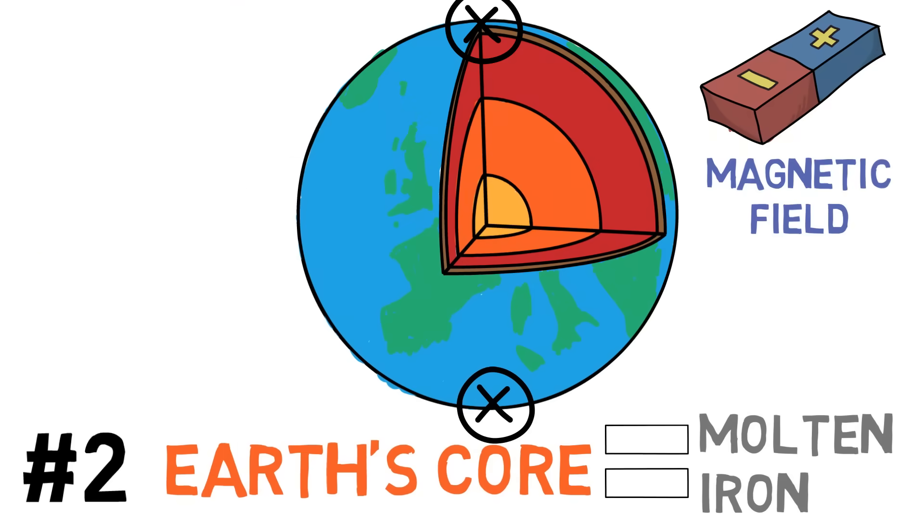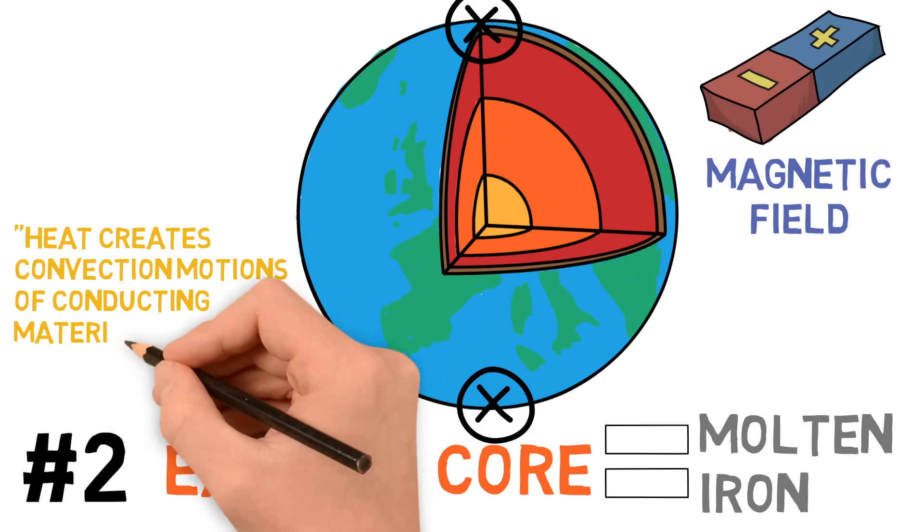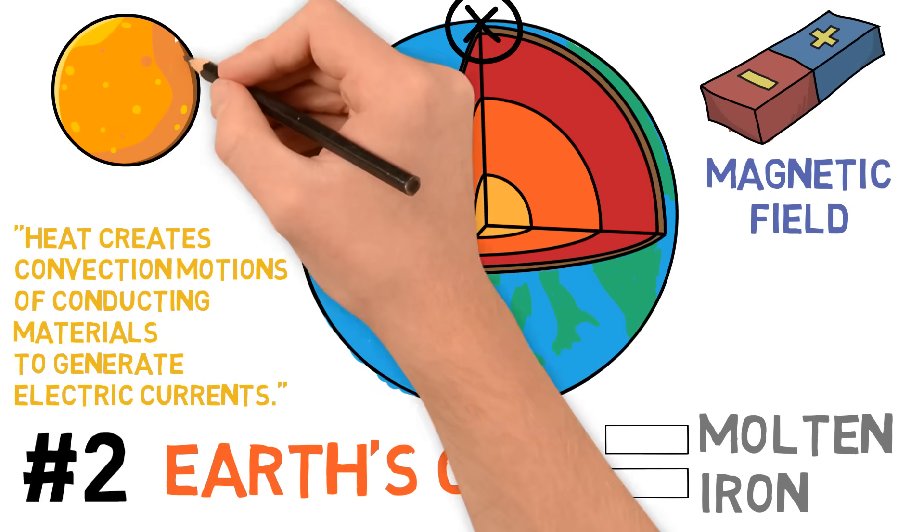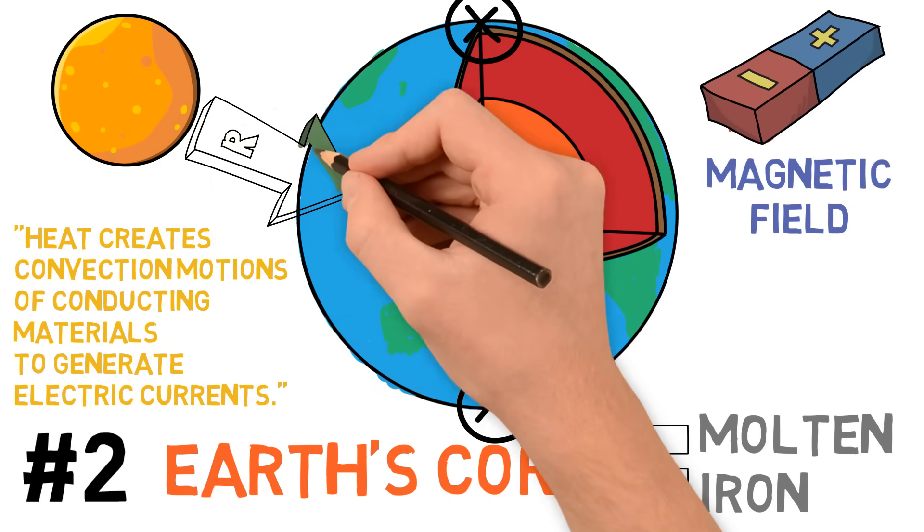Apparently, heat creates convection motions of conducting materials to generate electric currents. And this magnetosphere is extremely important to our survival on Earth. Without it, the particles from the sun's solar wind would hit us directly, exposing Earth to a lot of radiation.